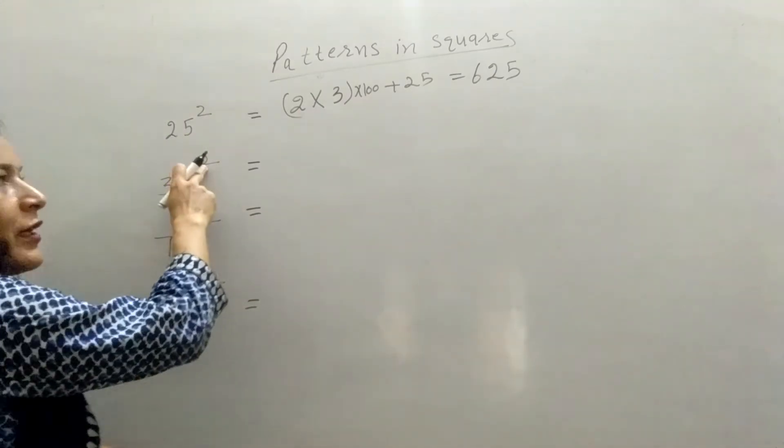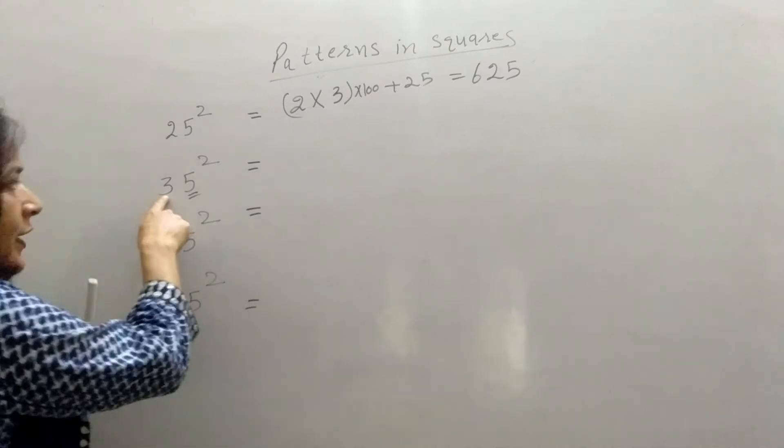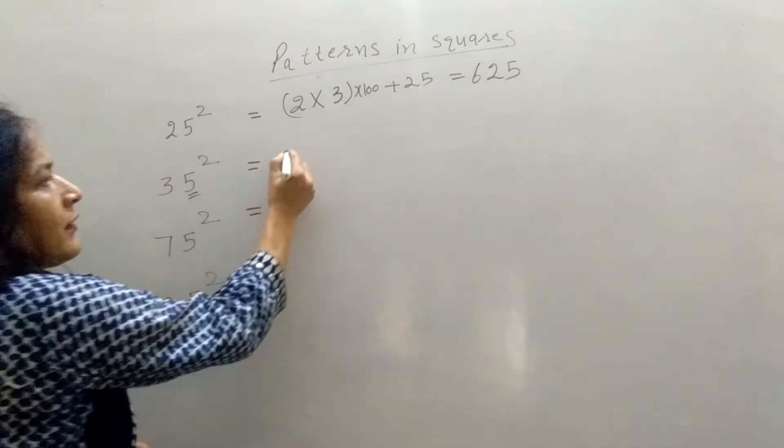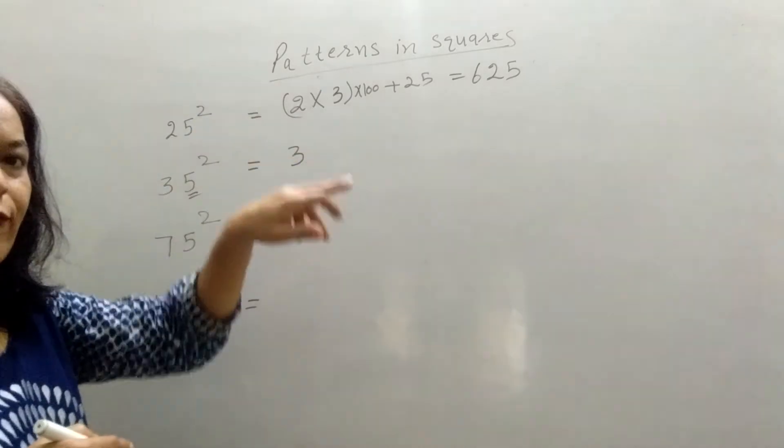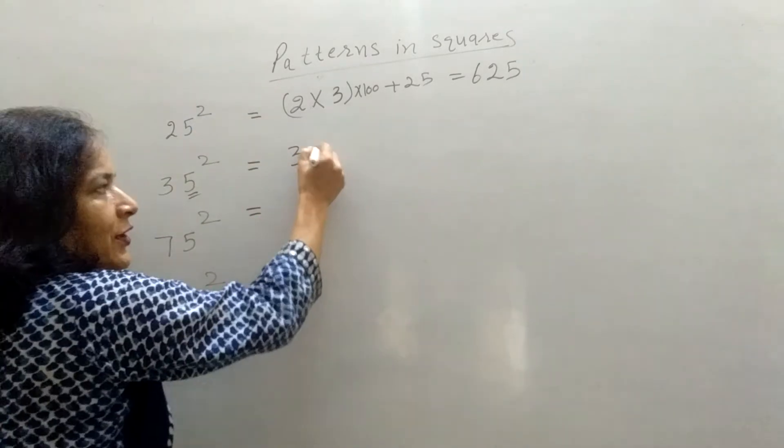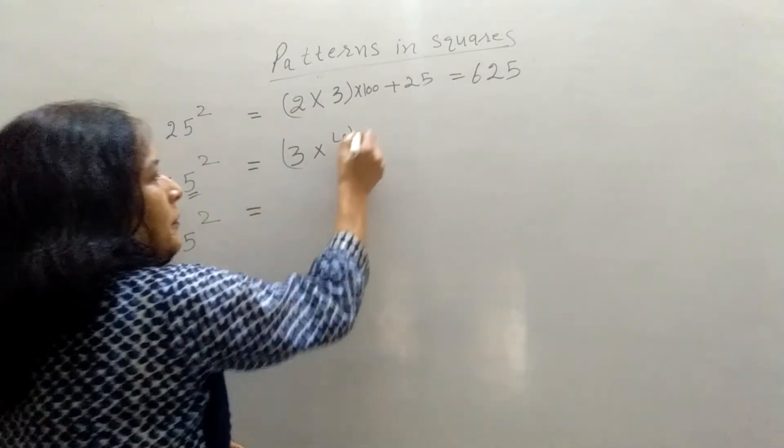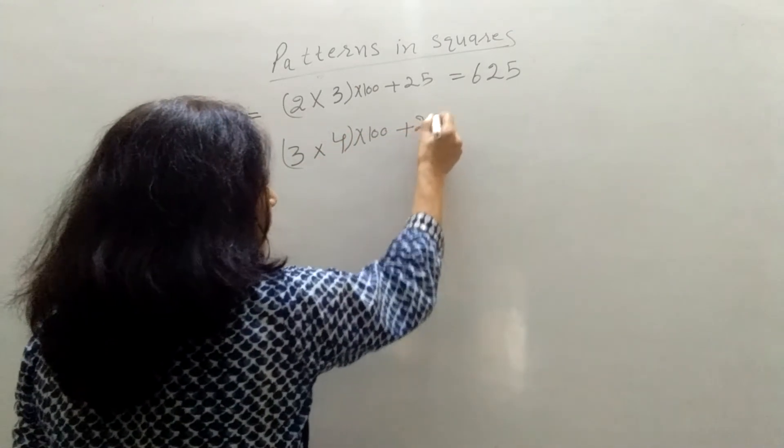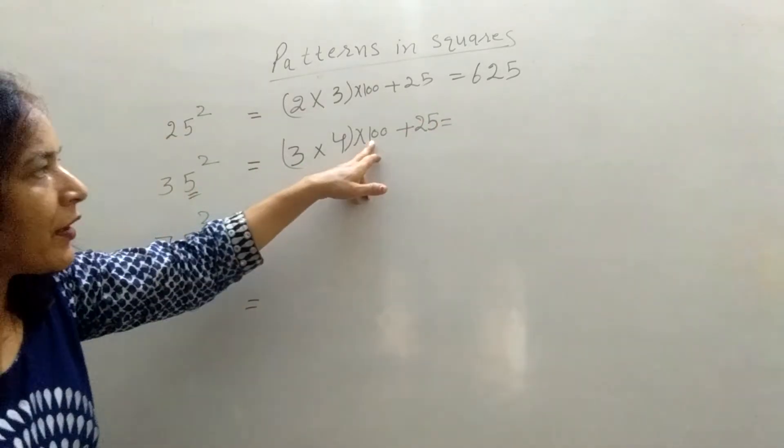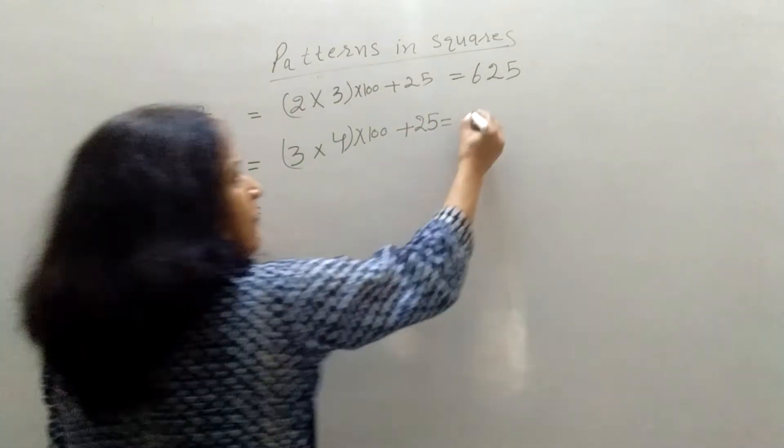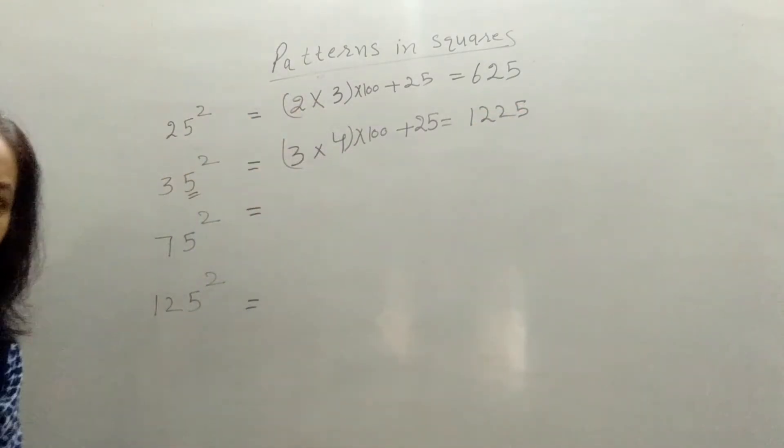35 square. Set 5 to one side. 3 is the number. Then successor of 3 is 4. What comes after 3? 4. 3 into 4. Multiply by 100 plus 25. 3 into 4. 12. 12 into 100. 1200 plus 25. So 35 square will be 1225.